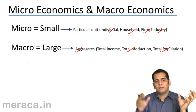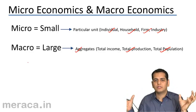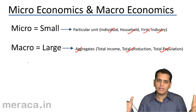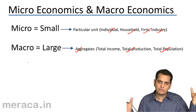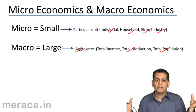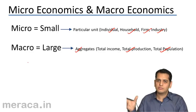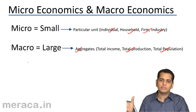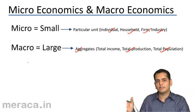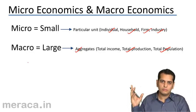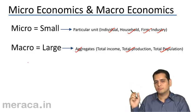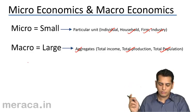So, micro means small and macro means large. Microeconomics is economics related to individual units, while macroeconomics is economics related to the nation or a country.